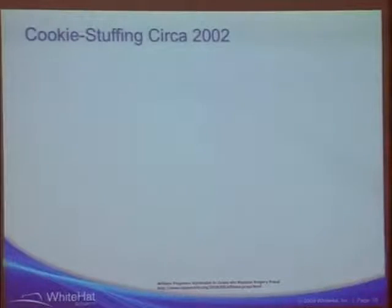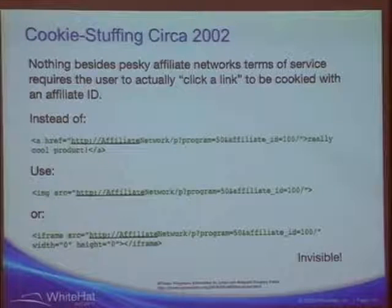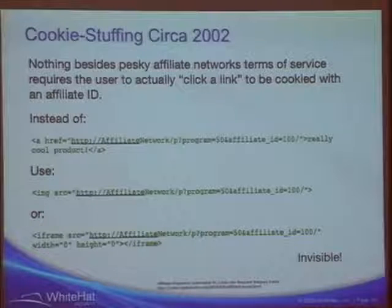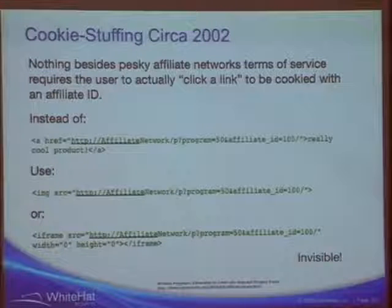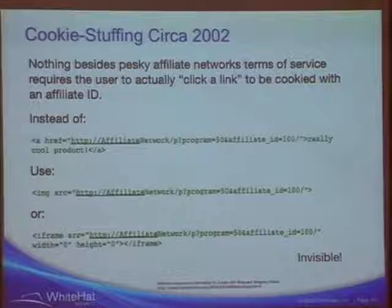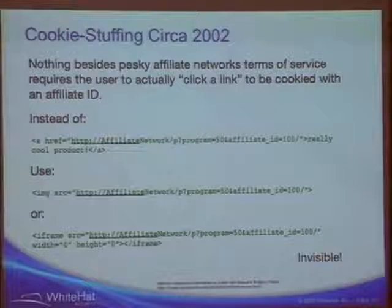The method for gaming these systems is called cookie stuffing — it takes one line of code. There's nothing that says to cookie a user with your affiliate ID they have to click a link. All they have to do is generate a web request you told them to generate. You can use an image tag which auto-generates the request and cookies them automatically — you can use an iframe too. Place these one-liners in blog comments, social networking profiles, or spam users in webmail. Any place with HTML, you put this little piece of code in — and if they later buy something on Amazon, you get commissioned.